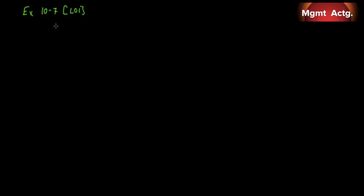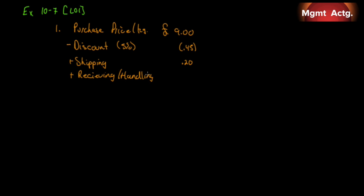All right, so given the data that we have to determine the purchase price per kilogram. The purchase price per kilogram. Well, we're told it is nine pounds to purchase. However, from that we receive a discount, and our discount is five percent, so that is .45. We have to pay for shipping, and that is .20. And we have receiving and handling, and that is .05. So adding all this up, we get to 8.80 pounds.